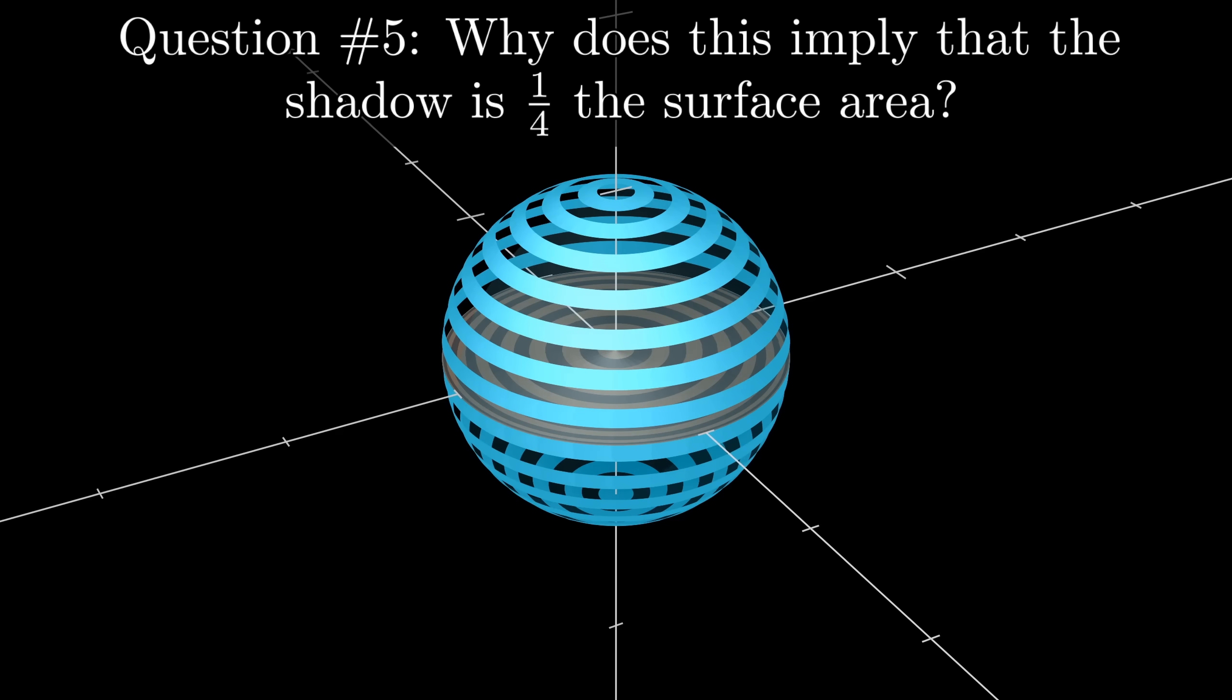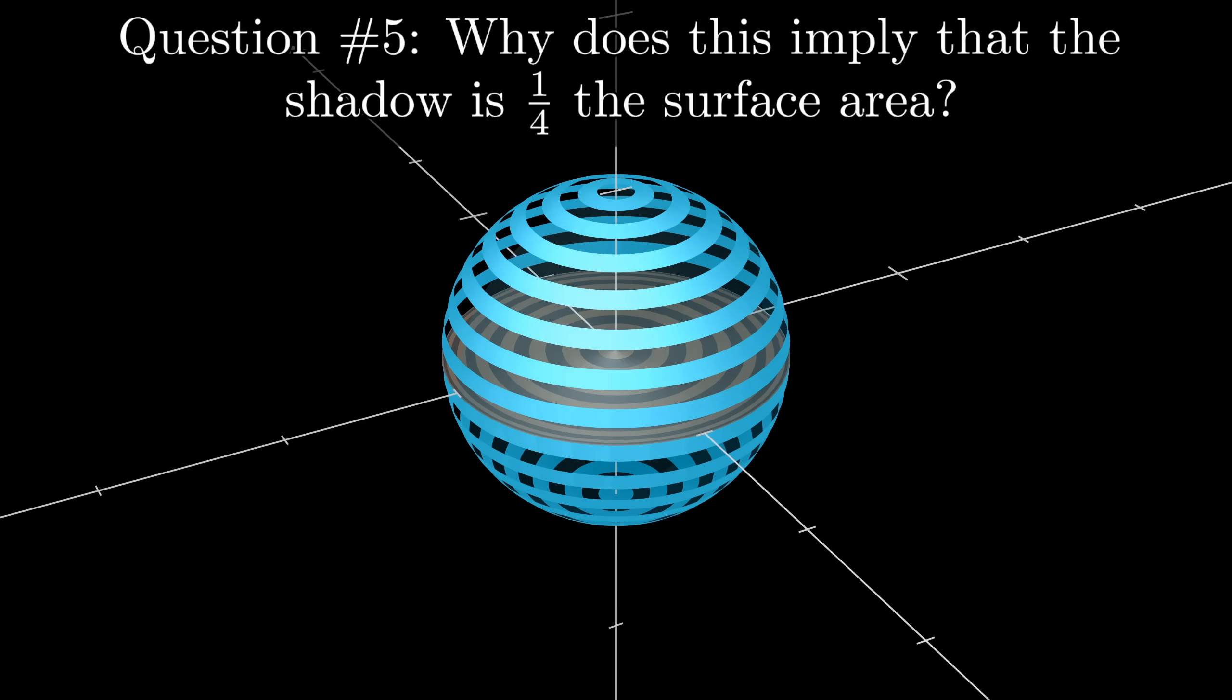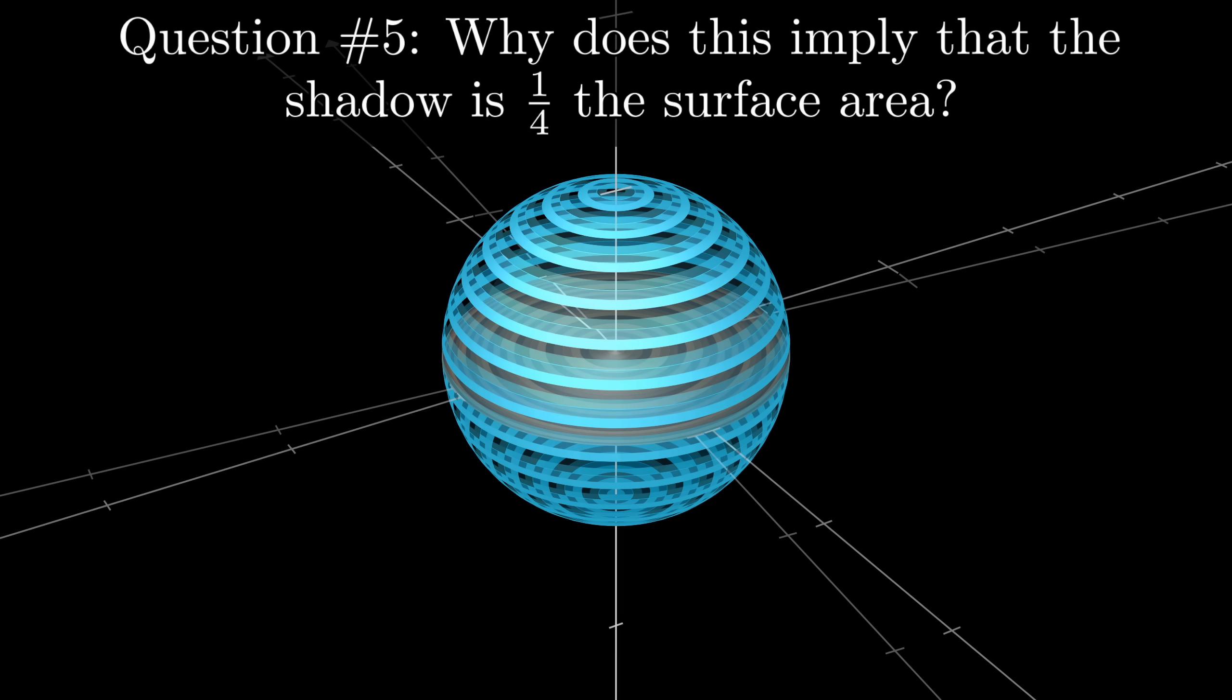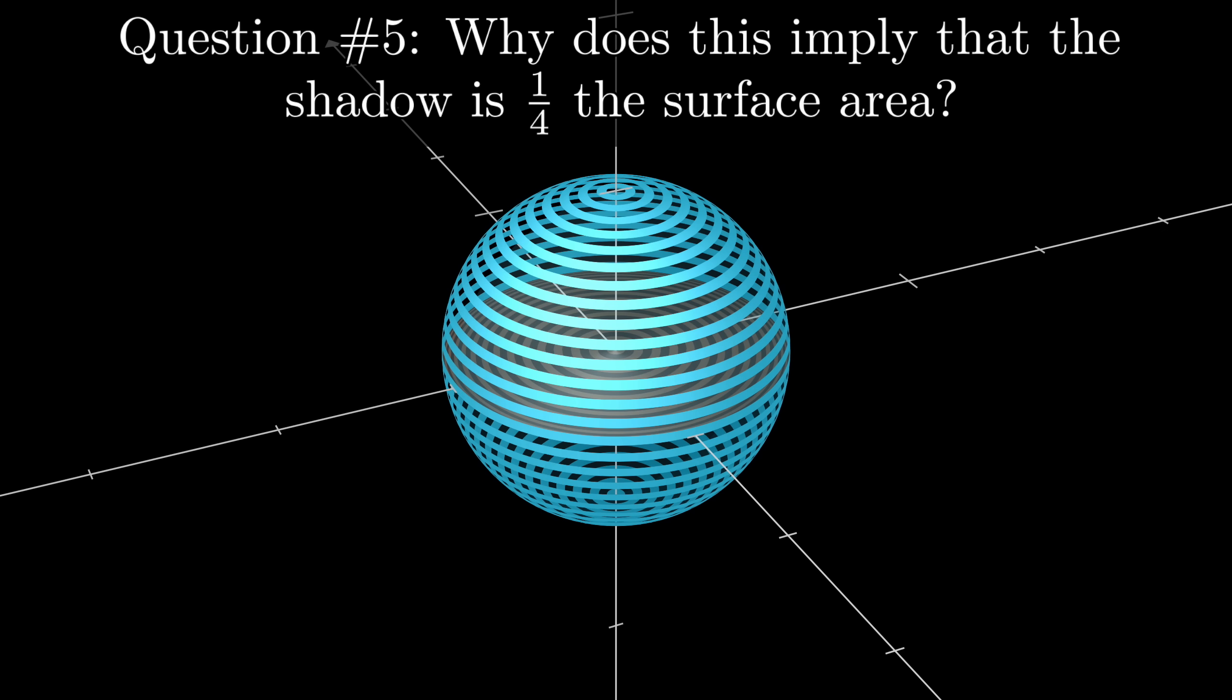And for question five, bring it on home. Why does this imply that the area of the circle is exactly one-fourth the surface area of the sphere, particularly as we consider thinner and thinner rings?